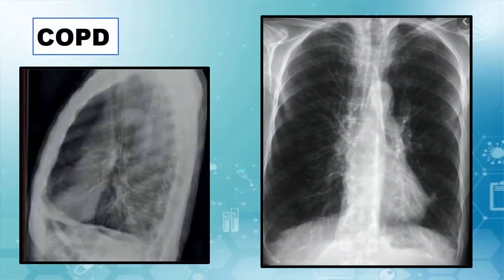COPD produces thorax expansion, which is characterized by a lower and flattened diaphragm and an anterior-posterior chest cavity length equal to the lateral length. Moreover, it is very remarkable to find a translucent parenchyma and bullae, which look like big spaces of free air.